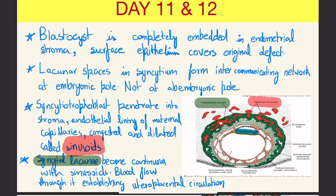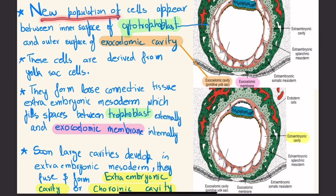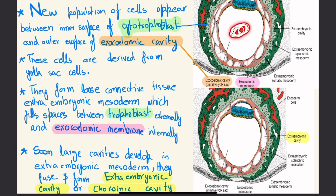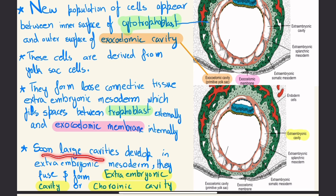In the meantime, a new population of cells appears between the inner surface of the cytotrophoblast and the outer surface of the exocelomic cavity. These cells are derived from the yolk sac and form loose connective tissue — the extra embryonic mesoderm — which fills the spaces between the trophoblast and exocelomic membrane. Soon, large cavities develop in the extra embryonic mesoderm, fuse, and form the extra embryonic cavity, also called the chorionic cavity.